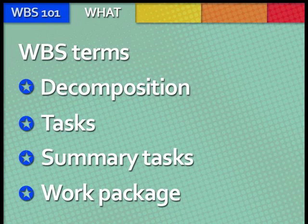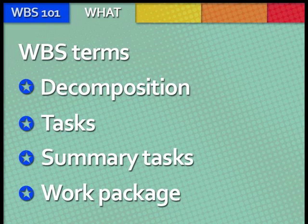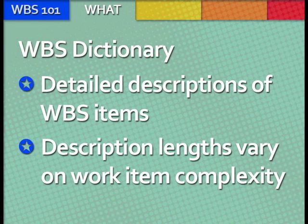The final level of a WBS is the Work Package. The Work Package is the only level which can be given time estimates since they are individual elements of the project. A WBS dictionary is a document that describes detailed information about each WBS item. These Work Package descriptions can either be a short paragraph or a page or more, depending on the complexity of the item.